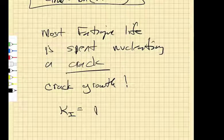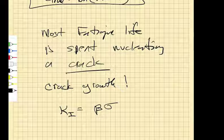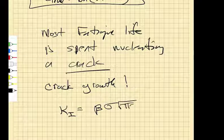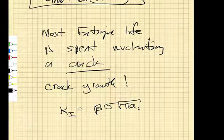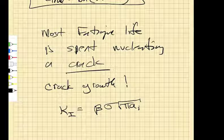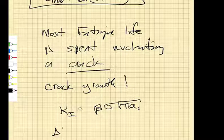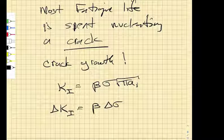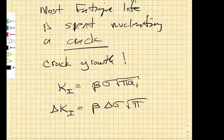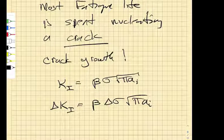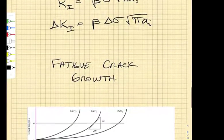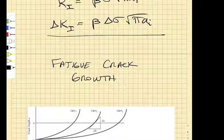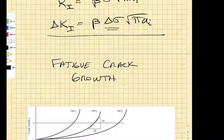If we are loading with some cyclic stress amplitude, then the delta K is going to be equal to beta delta sigma times root pi Ai. That's an interesting thing. So then we're going to look at that. We're going to look at fatigue crack growth as a function of different delta sigmas.